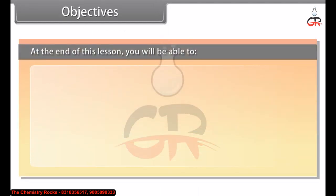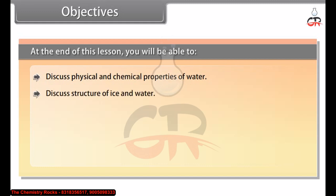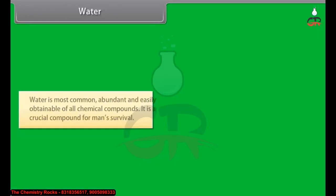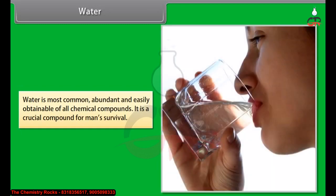At the end of this lesson, you will be able to discuss physical and chemical properties of water, discuss the structure of ice and water, distinguish hard and soft water, explain the methods of preparation of hydrogen peroxide and discuss its physical and chemical properties, define heavy water, and discuss dihydrogen as a fuel.